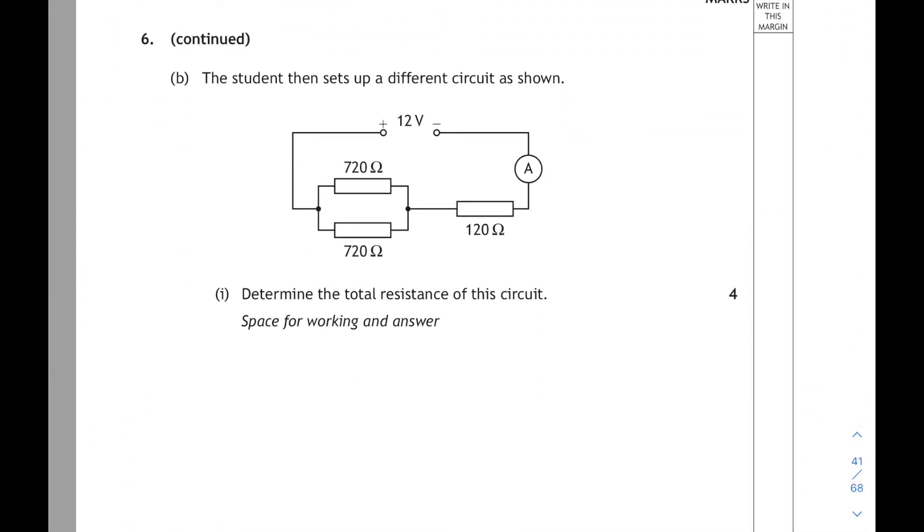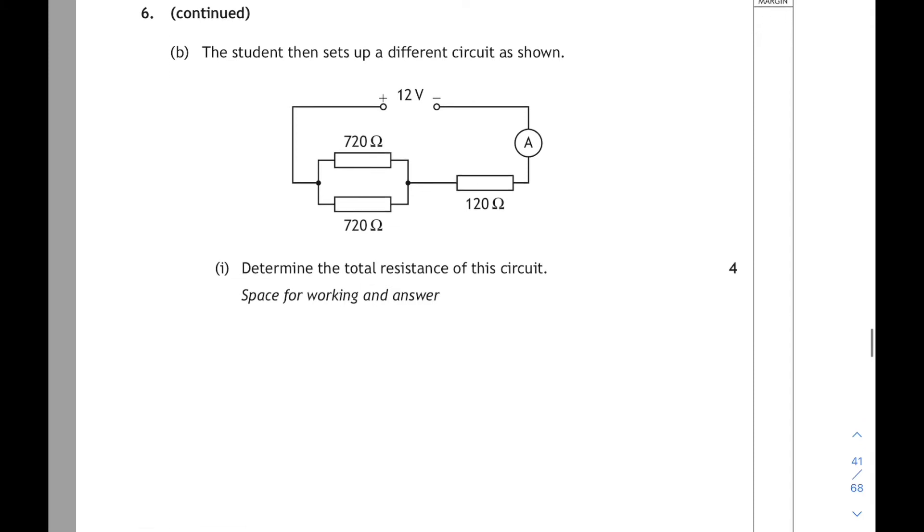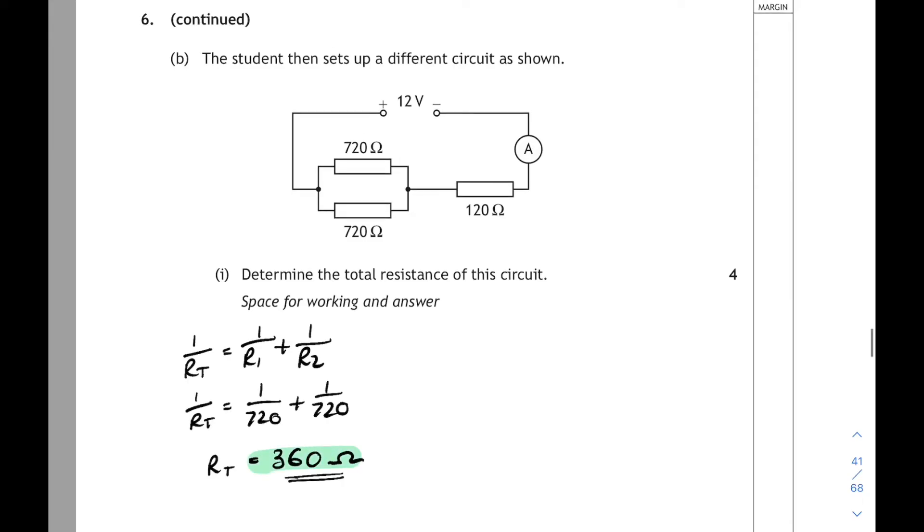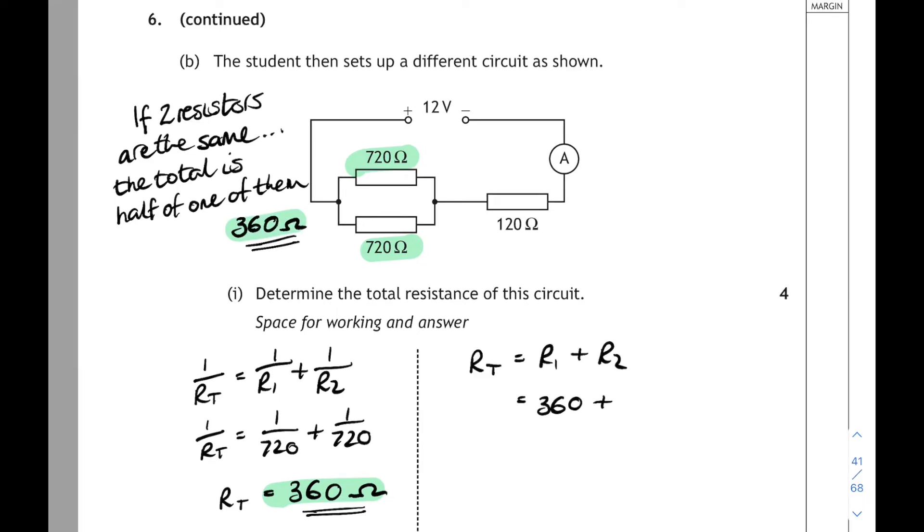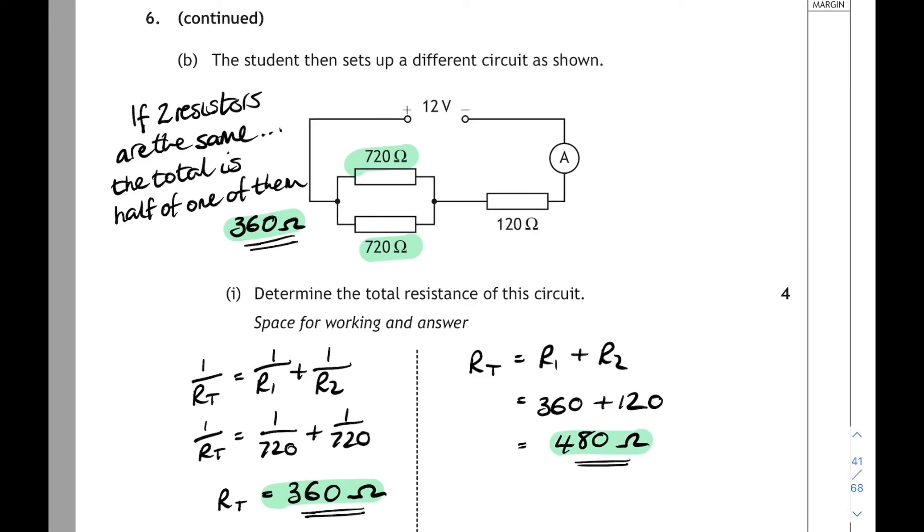Moving on. Six part C. The student sets up a different circuit as shown. This time we've got two parallel resistors. And we have to determine the total resistance of the circuit. So firstly we'll do the parallel bit. It's two 720 ohm resistors in parallel. And if you do that in your calculator, using the relationship, you'll get 360 ohms. Remember the shortcut as well, that if the two resistors are the same in parallel, then the total resistance will be half of one of them. Then don't forget we have to add that to the 120 ohm there in series. So 360 plus 120 is 480 ohms. Same as before.